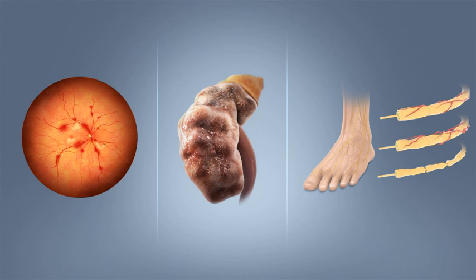Galen named the disease 'Diarrhoea of the urine' (diarrhoea urinosa). The earliest surviving work with a detailed reference to diabetes is that of Aretaeus of Cappadocia, 2nd or early 3rd century CE. He described the symptoms and the course of the disease, which he attributed to the moisture and coldness, reflecting the beliefs of the pneumatic school. He hypothesized a correlation between diabetes and other diseases, and discussed differential diagnosis from the snake bite, which also provokes excessive thirst. His work remained unknown in the West until 1552, when the first Latin edition was published in Venice. Two types of diabetes were identified as separate conditions for the first time by the Indian physicians Sushruta and Charaka in 400–500 CE.